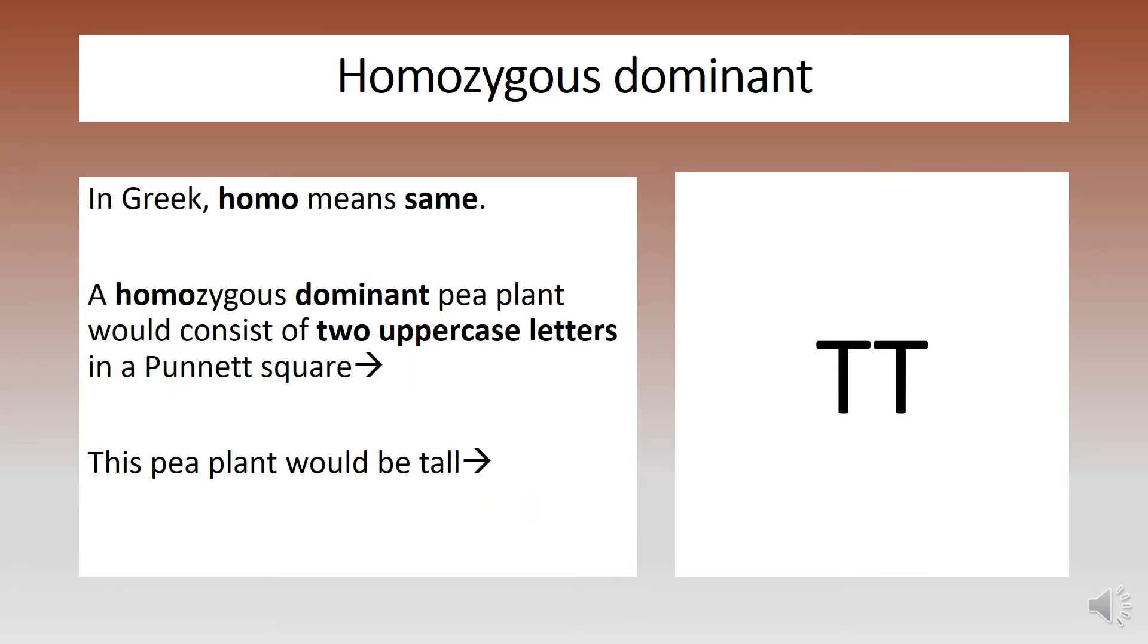In Greek, homo means same. A homozygous dominant pea plant would consist of two uppercase letters in a Punnett square. This pea plant would be tall.